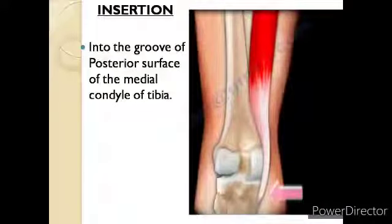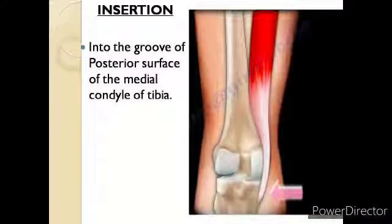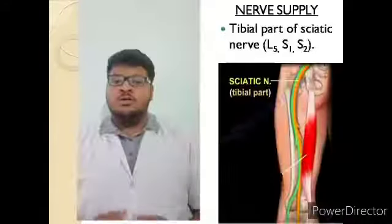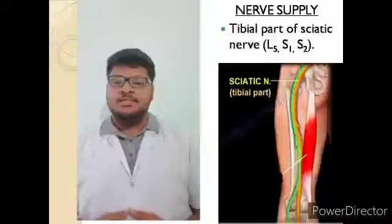The insertion of semimembranosus muscle is into the groove on the posterior surface of the medial condyle of the tibia. Expansions from the tendon also form the oblique popliteal ligament and the fascia covering the popliteus.